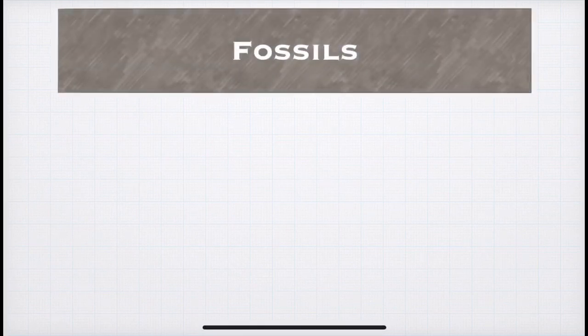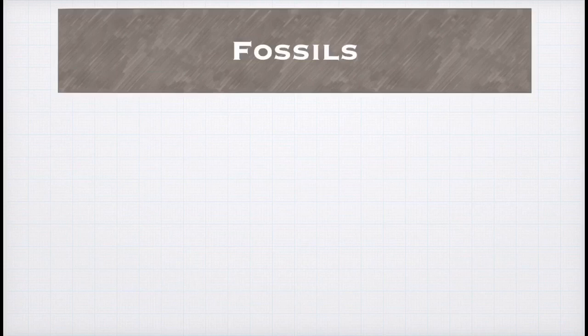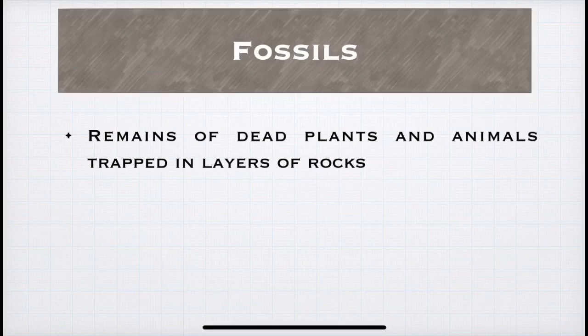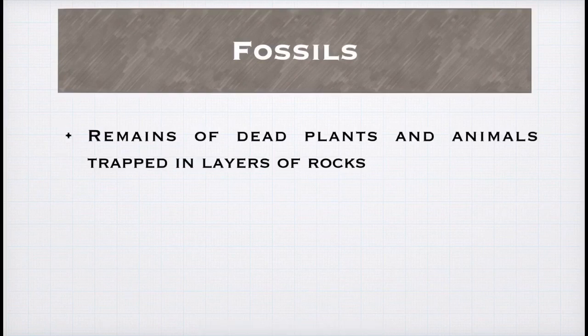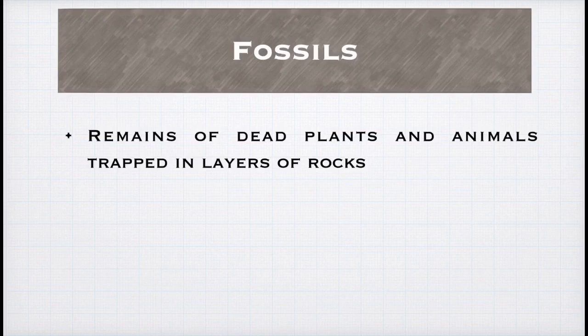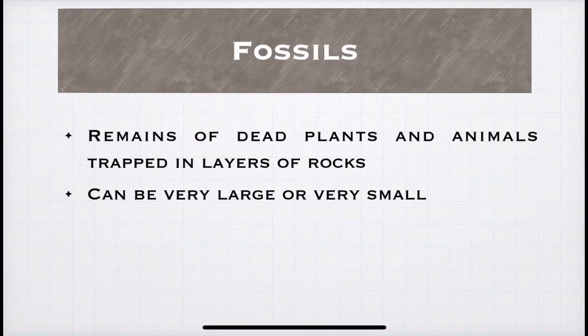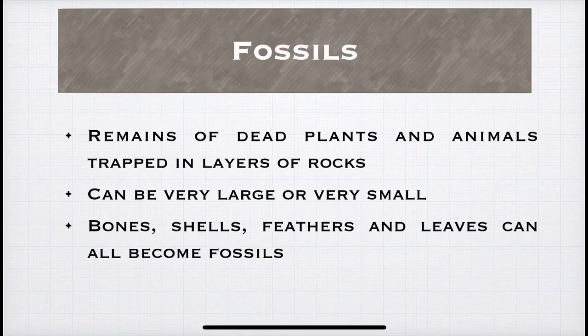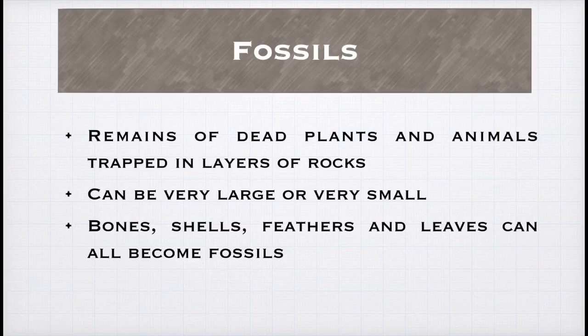Next, we will study about fossils. Now, fossils are actually the remains or the traces of plants and animals trapped in layers of rocks. So, what do we mean by this is that small amount or small quantity of plants or animals get trapped in the rocks and over hundreds and thousands of years, those remains become traces. Fossils can be very large in size or they can be very small. Also, the bones, shells, feathers of animals and birds and the leaves of plants all can become fossils. So, I hope it's clear.